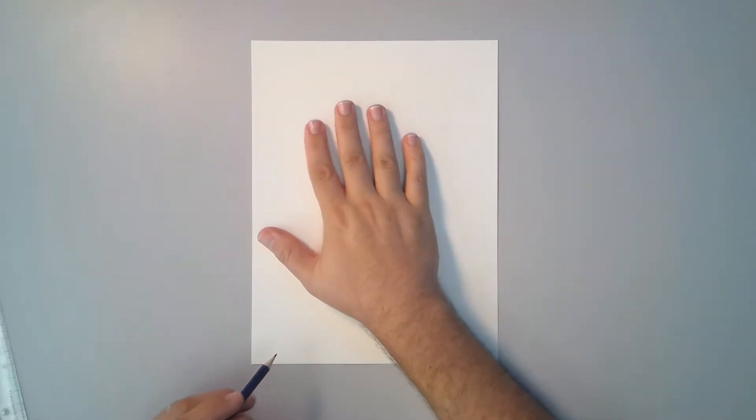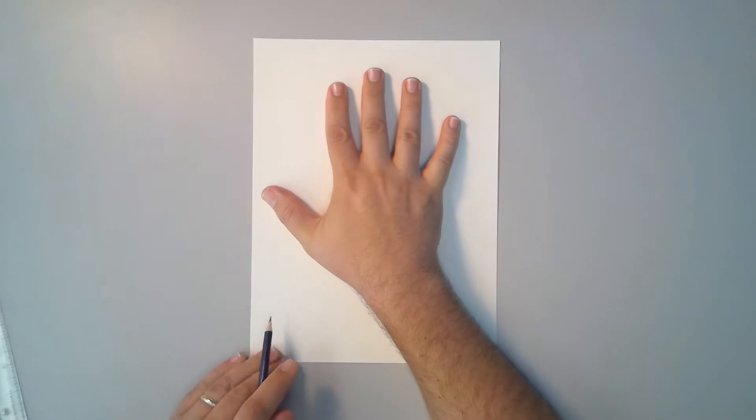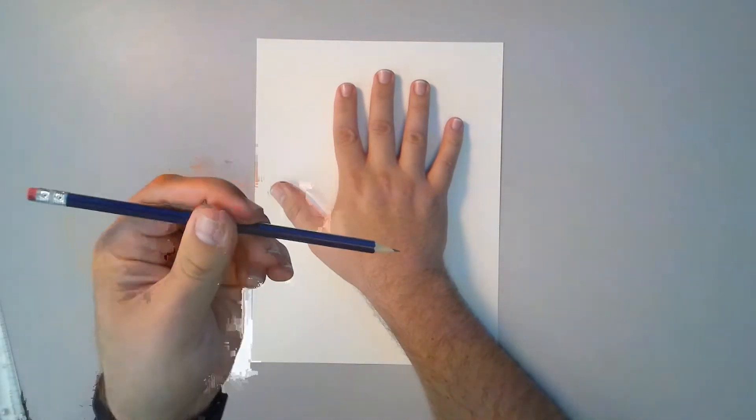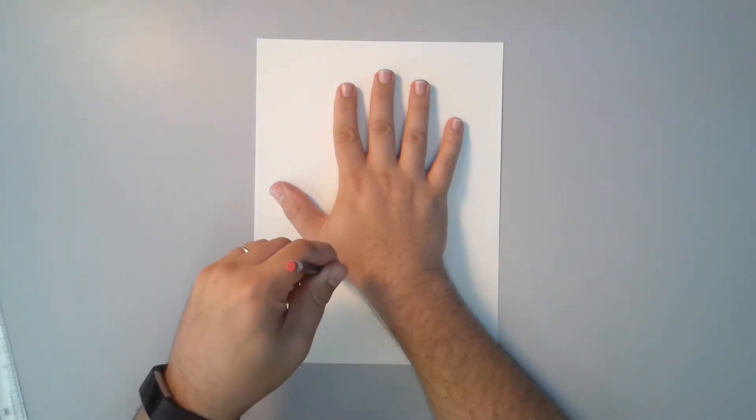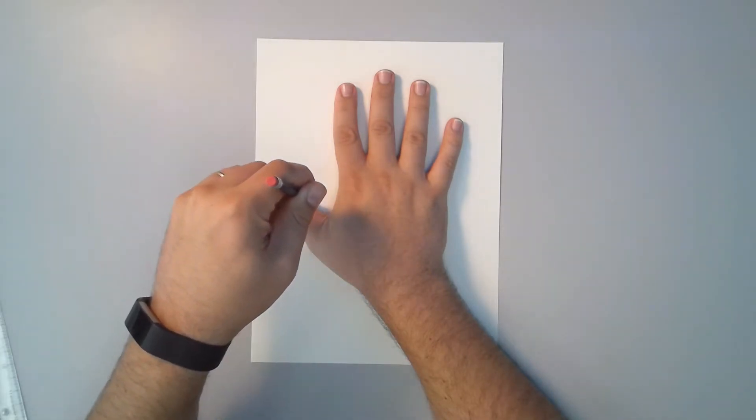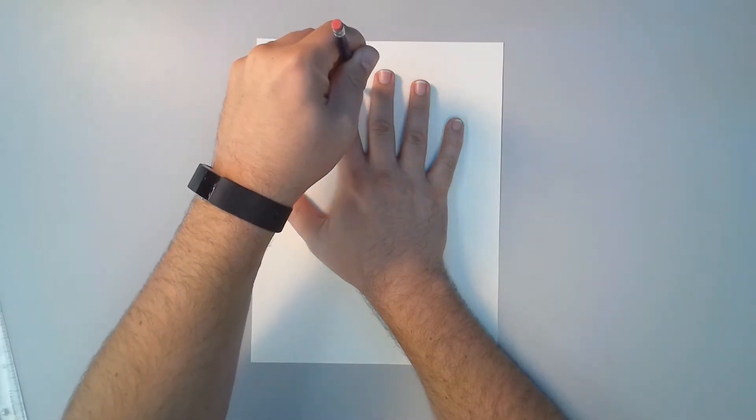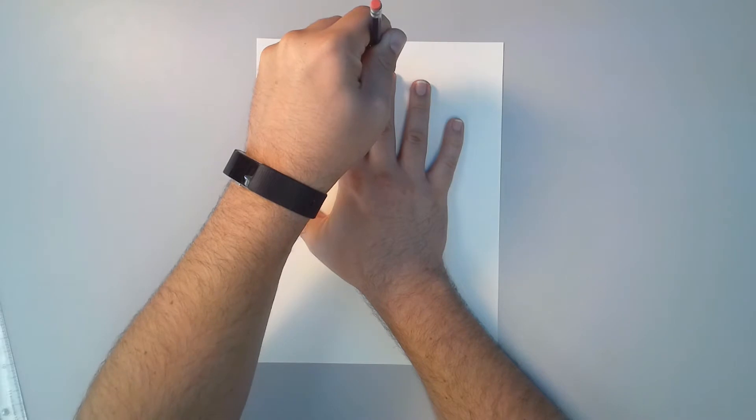I'm going to show you how to trace your hand. Basically, you want to make sure that your hand is right in the center of your paper. You don't want to put it too low down. You want your wrist to show as well. So when you start tracing, hold your pencil straight up and down, and you're going to make sure that as you're tracing, you don't dip in under your fingers because that will kind of mess up your tracing.